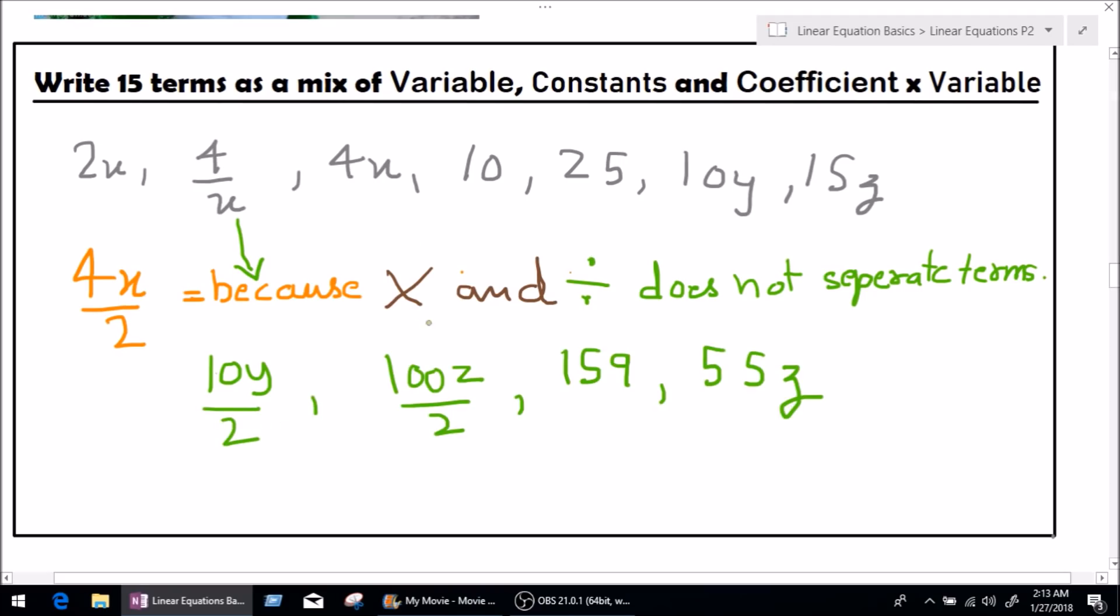So, we need three more. Let's write one constant, 996. Let's write a coefficient variable, 12x and one coefficient variable again, 40x divided by 10. See? That's how easy it is to write a term. And that's all what a term is.